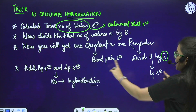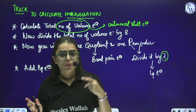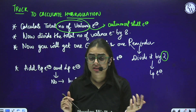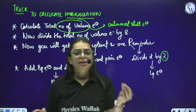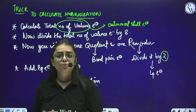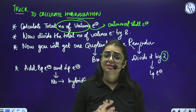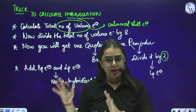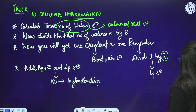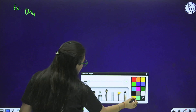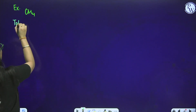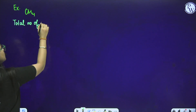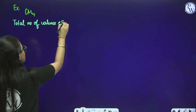Now let us start with examples. Taking the first example: CH4. First, calculate total number of valence electrons. Carbon has atomic number 6, configuration 1s2, 2s2, 2p2 — so 4 valence electrons. For hydrogen, take valence electrons as 7. So it is 4 into 1 carbon plus 7 into 4 hydrogen, giving 4 plus 28, which is 32 electrons.